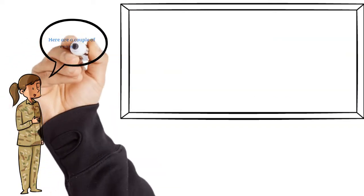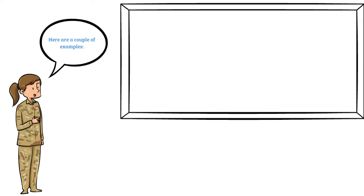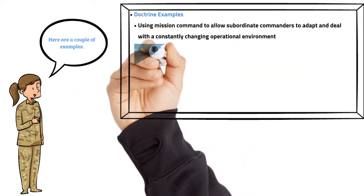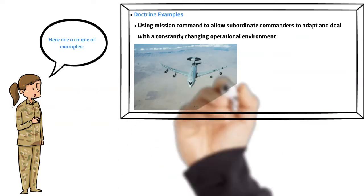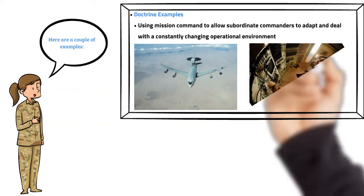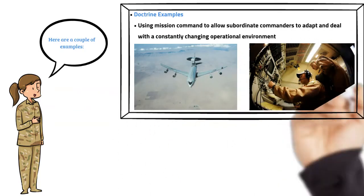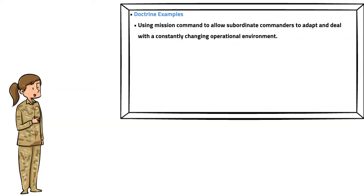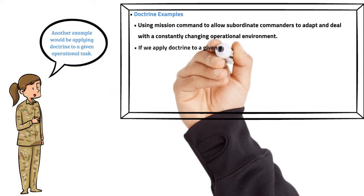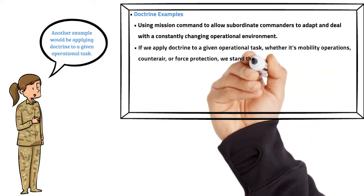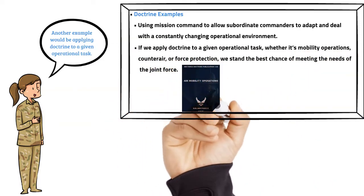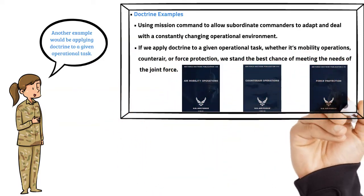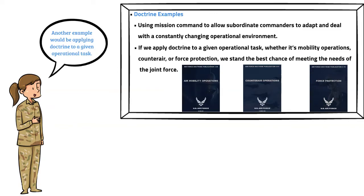Let's look at a couple of examples of doctrine. Using mission command to allow subordinate commanders to adapt and deal with a constantly changing operational environment is how doctrine affects the way we succeed in our duties. If we apply doctrine to a given operational task — whether it's mobility operations, counter-air, or force protection — we stand the best chance of meeting the needs of the joint force.